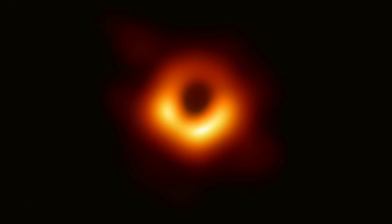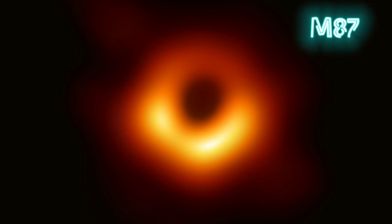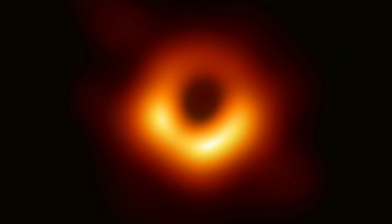This is the first image of a black hole ever taken. It sits at the center of a distant galaxy, Messier 87 or M87. In this image, you can see a faint halo of light around a dark spot.